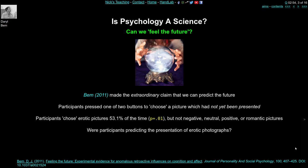The remarkable thing in Bem's experiment was that he reported participants chose erotic pictures — pictures of a sexual nature — 53.1% of the time. The chance level is 50%, so this is a little above chance, but it was significantly above chance. The p-value was 0.01. These erotic pictures were mixed with negative, neutral, positive, or romantic but non-erotic pictures. It seemed that subjects were choosing slightly better than chance to see the erotic picture — as if they were predicting something in the future.